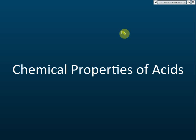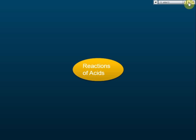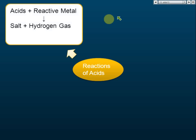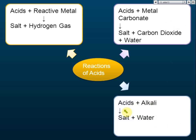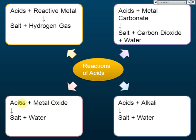Chemical properties of acids means the chemical reactions of acids. Acids can react with reactive metals to produce salt and hydrogen gas. Acids can also react with metal carbonate to produce salt, carbon dioxide, and water. Acids react with alkali to produce salt and water, and acids react with metal oxide to produce salt and water.